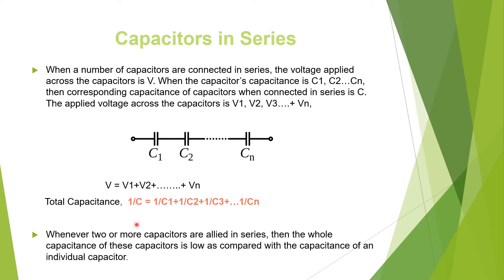When capacitors are connected in series, if voltage is applied across them, the effective voltage is the sum of the individual voltage drops: V = V1 + V2 + V3 + ... + Vn. An important point is that whenever two or more capacitors are connected in series, the total capacitance is lower compared to the capacitance of any individual capacitor.